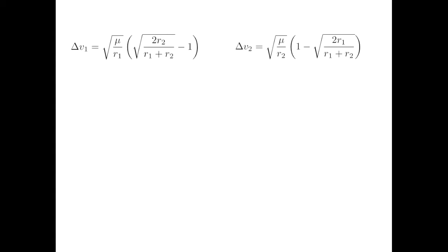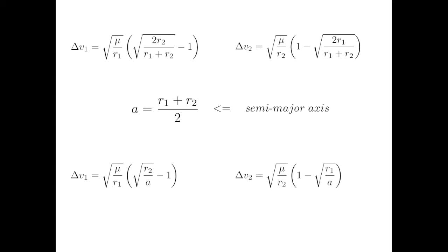If I take the average of the two radii of the orbits, that is, add them and divide by 2, I get this value a, which we call the semi-major axis of the elliptical transfer orbit. Notice that in both the formulas, in the fraction inside one of the square roots, we have a 2 in the numerator and an r1 plus r2 in the denominator, which is the reciprocal of the semi-major axis a. That means we can replace that part of the formulas with just a single a in the denominator of each fraction. This doesn't really change anything when performing calculations, but it does simplify the formulas a bit and make them easier to remember.